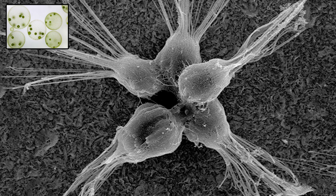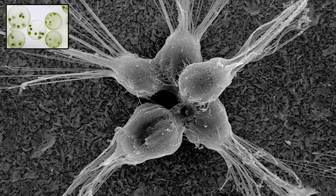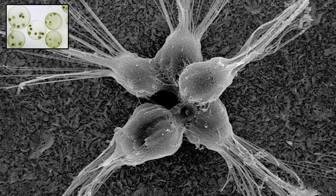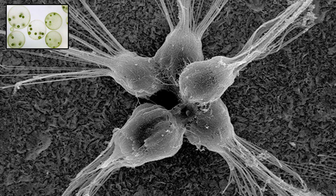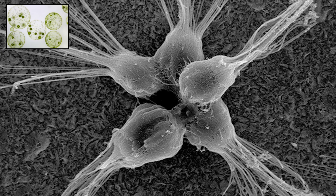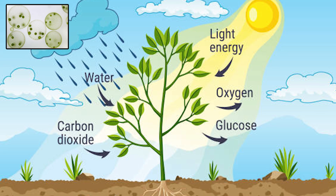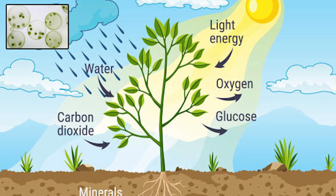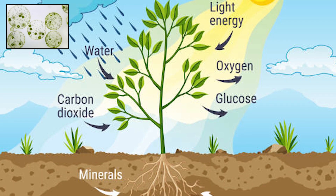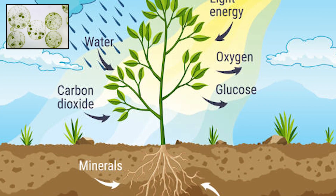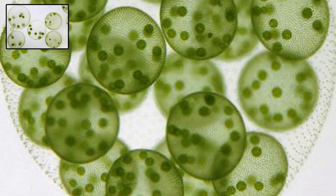For example, in animals, muscle cells handle movement, nerve cells transmit signals, and reproductive cells manage reproduction. In plants, some cells carry out photosynthesis, others provide structural support, and certain cells transport water and nutrients.